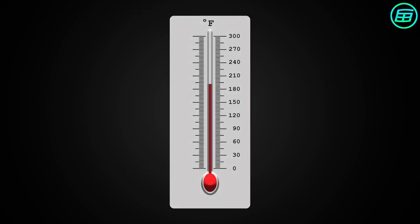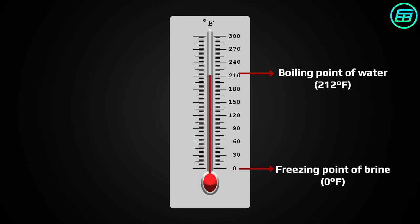In 1724, Fahrenheit proposed a temperature scale. He set the freezing point of brine, a solution of salt in water, at zero and the boiling point of water, at sea level and under standard atmospheric pressure, at 212. On this scale, the freezing point of pure water is 32.